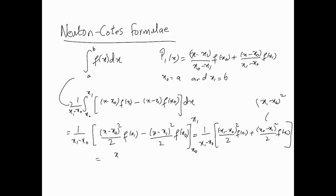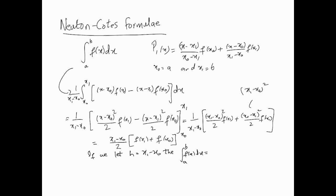Taking out (x1 − x0)² which cancels with the denominator, what's left inside is just f(x1) plus f(x0). Introducing h = x1 − x0, this becomes simply h/2 · (f(x0) + f(x1)). Interestingly, this is the trapezoidal rule — using the Newton-Cotes first-order Lagrange approximation, we arrive at the trapezoidal rule.